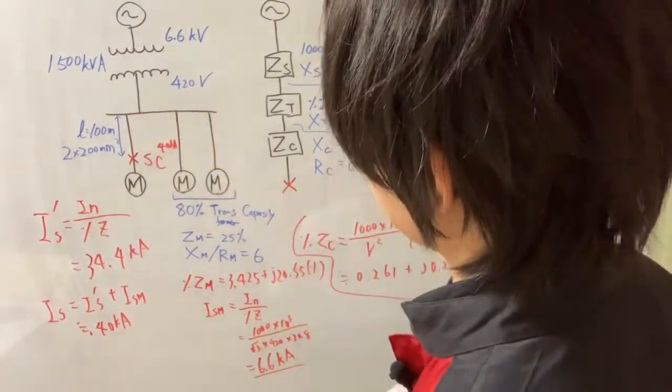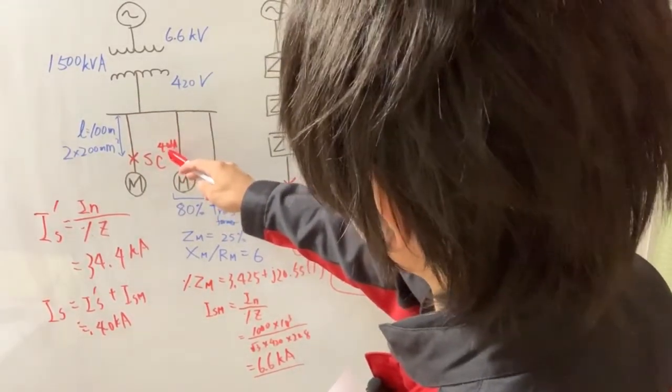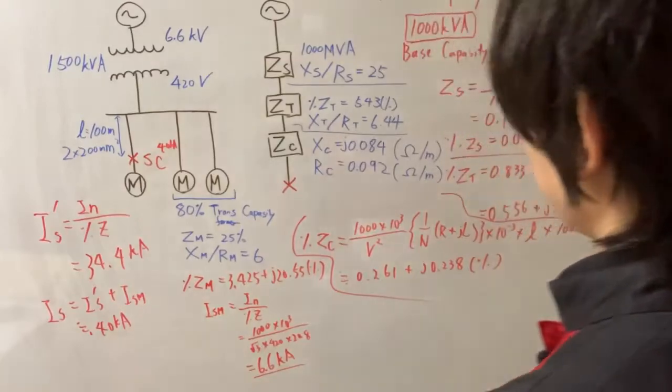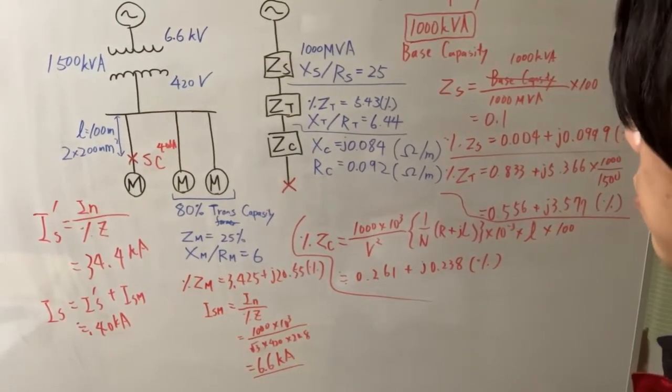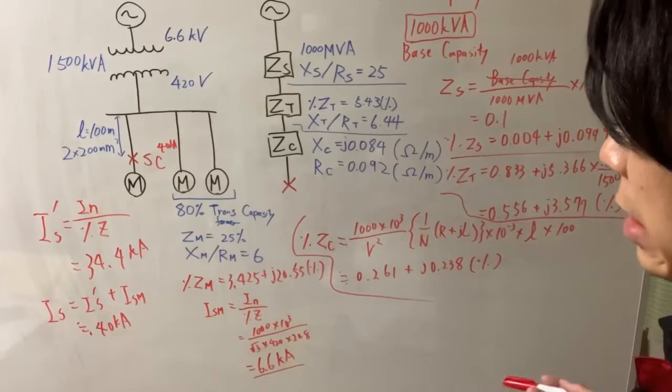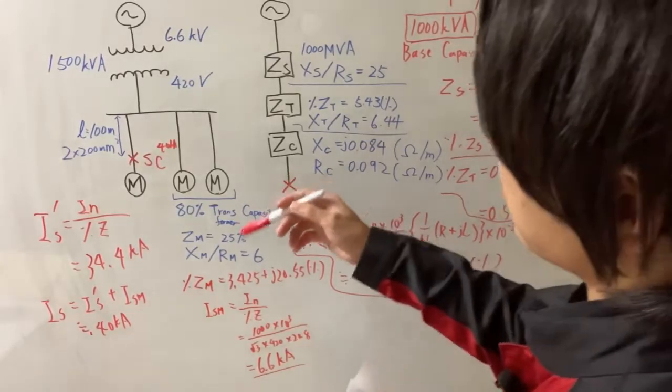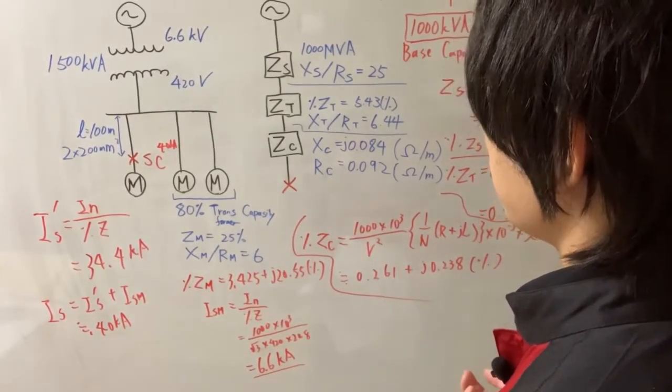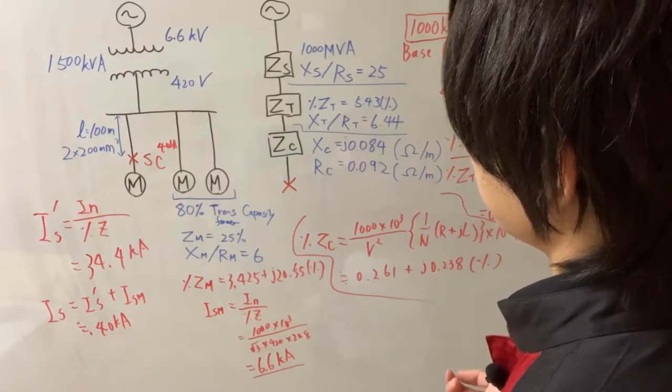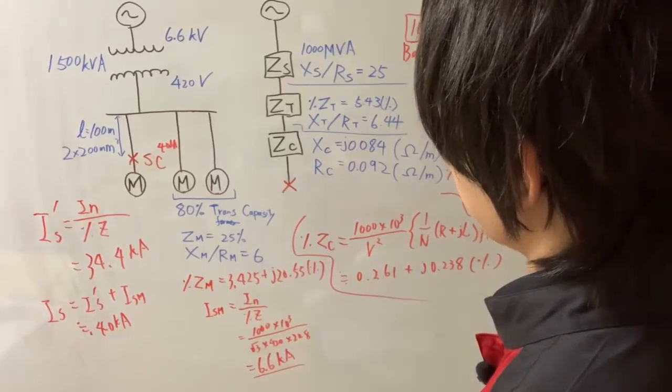So the available fault current is 40kA. So these devices like circuit breaker should be greater than 40kA SCCR. So like 45kA SCCR or 65kA or even 100kA, it's up to you. But generally, the higher SCCR tends to be more expensive and size also increases. So engineers have to make an optimal design for each device.